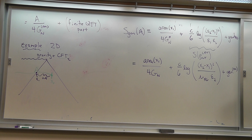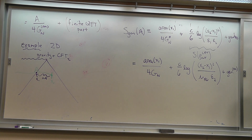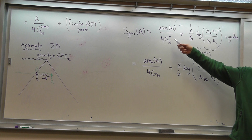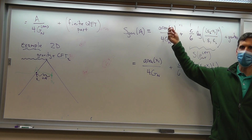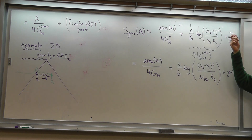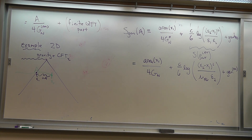Does gravity have a negative beta function? Well, let's see. Gravity gets strong at high energies. It seems like it's one over G_Newton that has a UV divergence, and one over G_Newton is minus infinity, and that minus infinity cancels the plus infinity. Does that mean G_Newton goes to zero as you increase your cutoff?